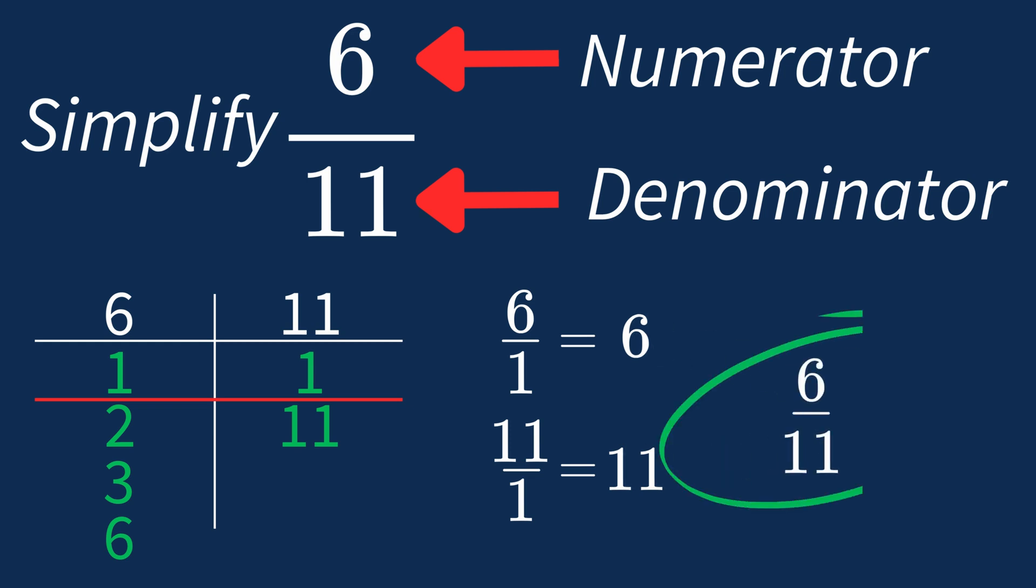This shows us that 6 over 11 is already in its simplest form. There's no larger number that can divide both parts evenly. So 6 over 11 is an irreducible fraction, meaning it's as simple as it can get.